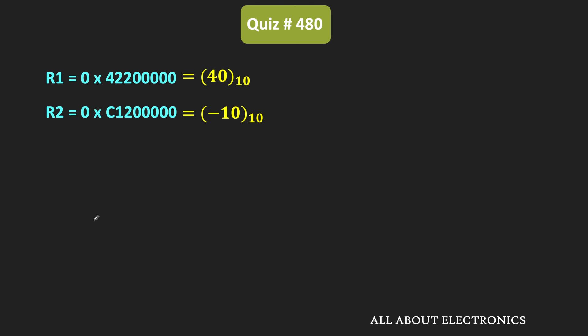The number in R1 is equal to 40, and the number stored in R2 is equal to minus 10. Taking the ratio of these two values gives minus 4. The value stored in register R3 is therefore equal to minus 4. Now let us find the corresponding stored value in register R3 in the IEEE format.